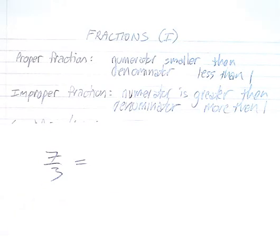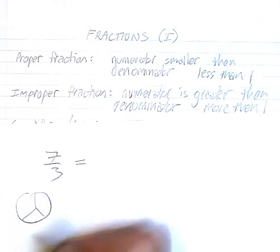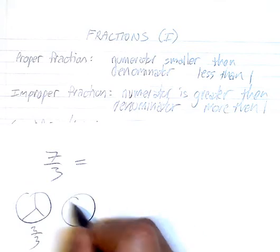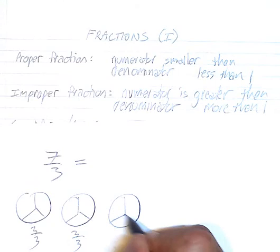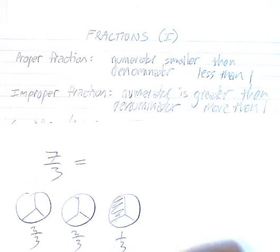So there's 3 thirds, and then another 3 thirds, and then what we're looking at is 1 more third. So 3 thirds, 3 thirds, and 1 third. So this is 2 wholes, and you got 1 third left.